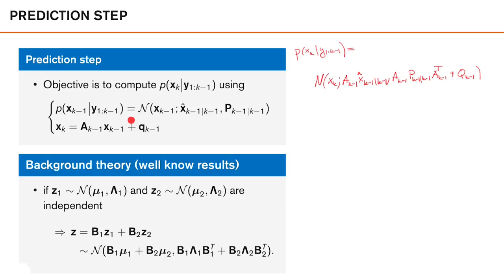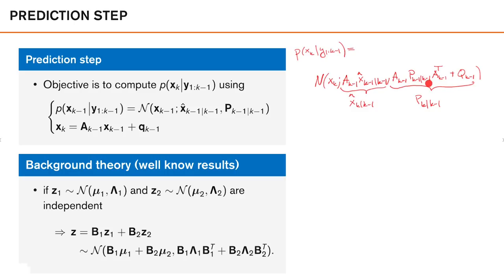To map this to standard notation, we call the predicted mean x-hat_{k|k-1}, interpreted as the estimate of x at time k given observations up to k-1, and the predicted covariance P_{k|k-1}, which is the covariance of x_k conditioned on measurements up to k-1. We see that what we calculate here is exactly the prediction step of the Kalman filter, and so we have now derived it.